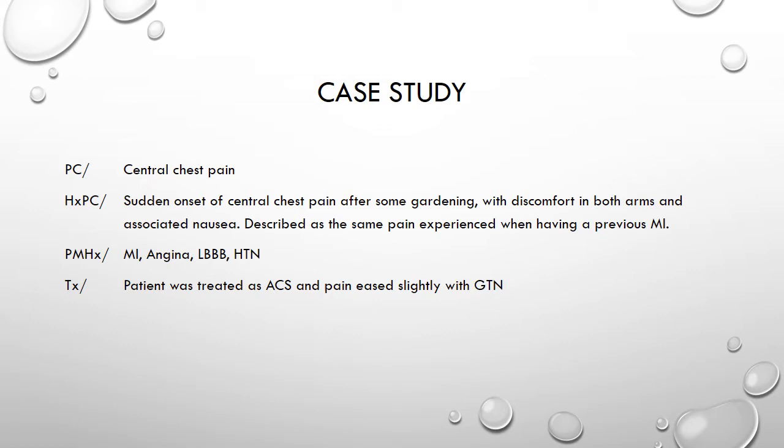They also described that the patient became pale and clammy, looking like ACS, and they tried to get him accepted for PCI despite the history of known left bundle branch block.